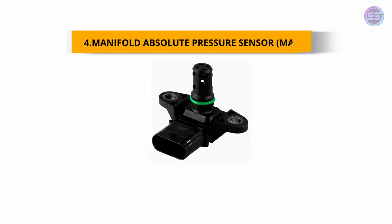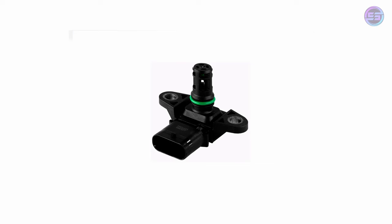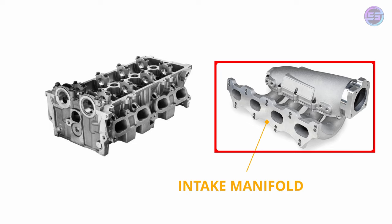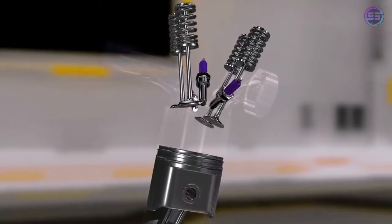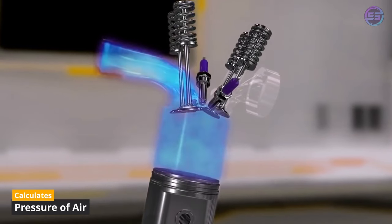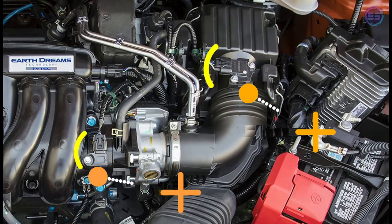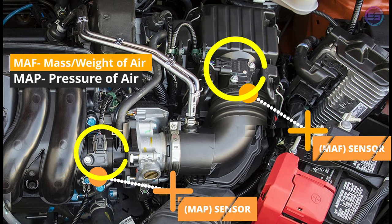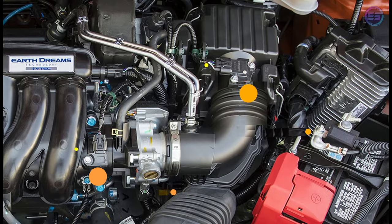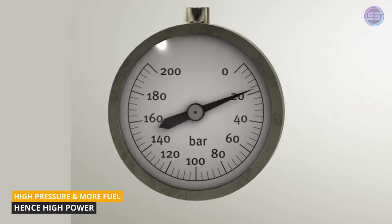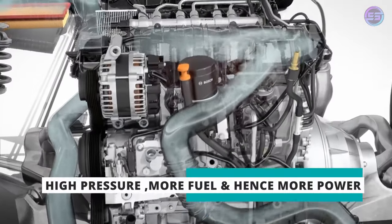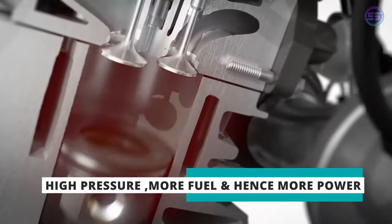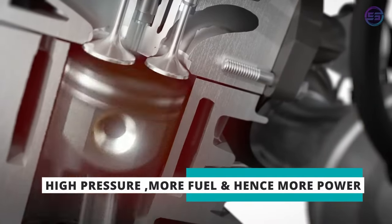Number four, the manifold absolute pressure sensor or the MAP sensor is a device situated in the intake manifold and is used to calculate the pressure of air going to the engine. It is very similar to the mass airflow sensor which measures mass flow of air, while the MAP sensor measures the pressure of air. The higher the pressure, the higher will be the mass of air and hence more fuel can be used. This sensor helps the ECU in determining the amount of air and fuel that has to be sent to the engine.